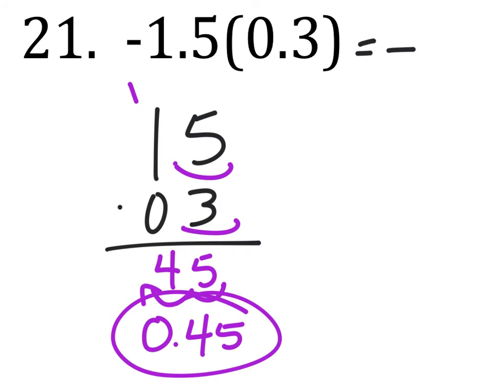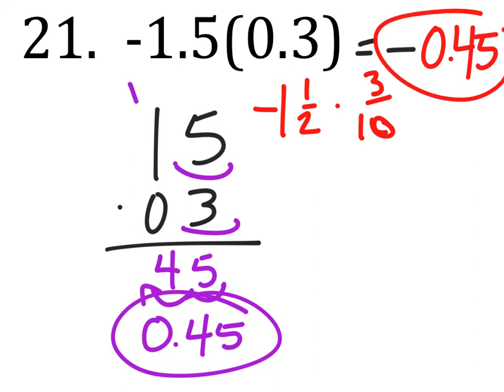Otherwise, you may have turned these into fractions, negative 1 and 1 half times 3 tenths, and then worked with it from there just like we did on those previous problems. But yes, it is negative 0.45. As a fraction, this would be a negative fraction, dividing by 5 would be 9 twentieths, negative 9 twentieths.